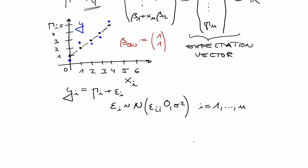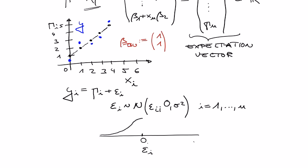What does that mean visually? Our epsilon_i is a real-valued random variable which has a univariate Gaussian distribution, like the ones we looked at with the probability density function last time. Its expectation is zero, so most of the probability density is around zero, and how broad or narrow it is depends on the value of sigma squared. If you sample from epsilon_i, you get most values around zero and only a few far away.